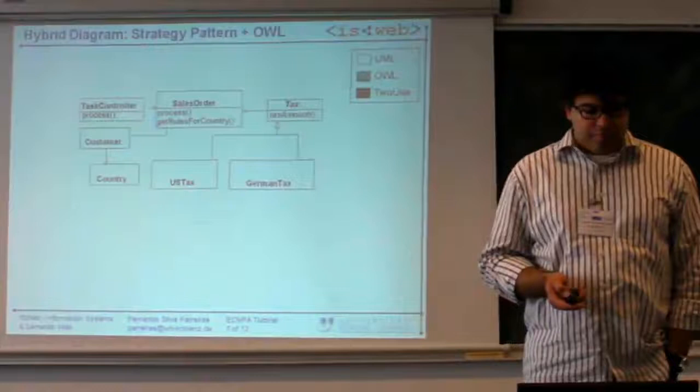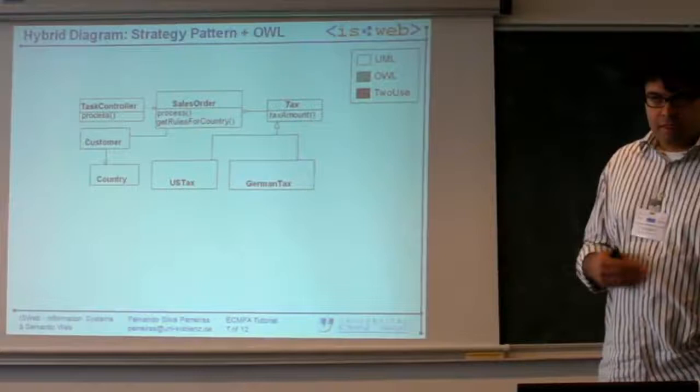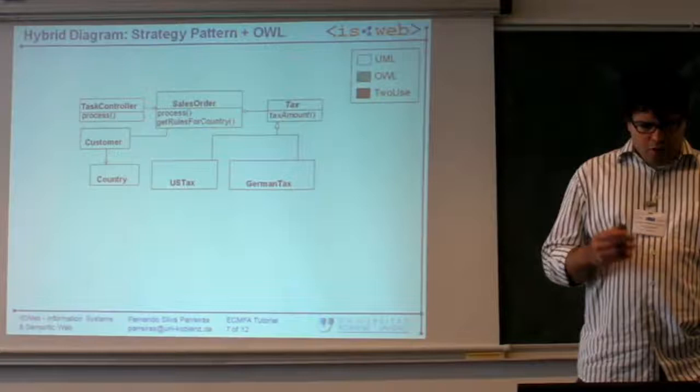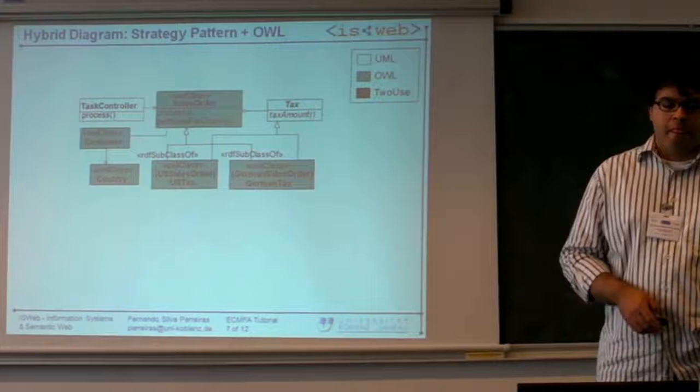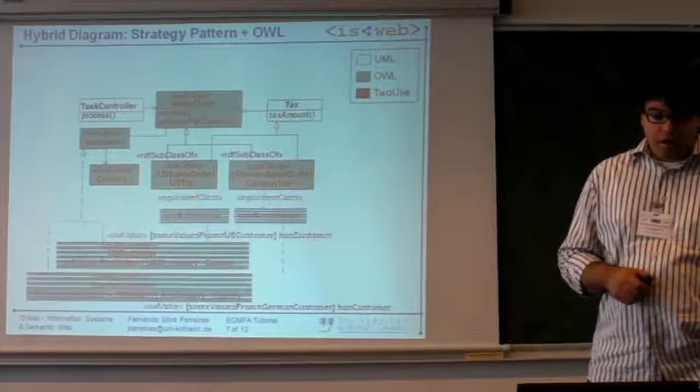The UML diagram will look as follows: here is the usual UML part that we have seen before. We have the TaxOrder, the SalesOrder, Tax, and US and German taxes. We go and extend this model with annotations. With our annotations we say all of these classes integrate. They are OWL classes. You don't have to annotate all the classes, as you see these other classes are not OWL classes.